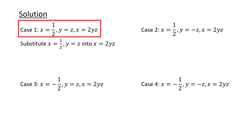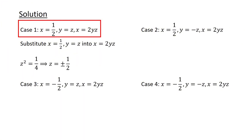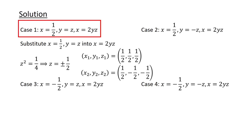For Case 1, we substitute x equals half and y equals z into the equation x equals 2yz to obtain 2z squared equals half. After dividing by 2, we get z squared equals one quarter. Taking the square root, we obtain z equals half or z equals minus half. Therefore, we obtain 2 solutions: x1 equals half, y1 equals half, z1 equals half; and x2 equals half, y2 equals minus half, z2 equals minus half.